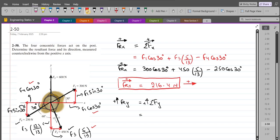So we have F1 sin 30 degrees plus F2 minus the vertical component of F3 force, which is F3 times the ratio of 12 upon 13, minus the vertical component of F4 force, which is F4 sin 30 degrees.